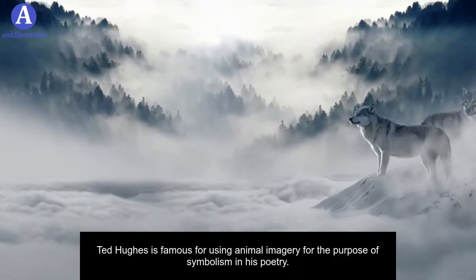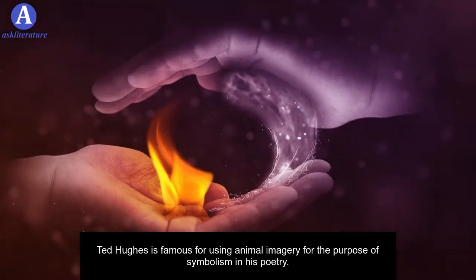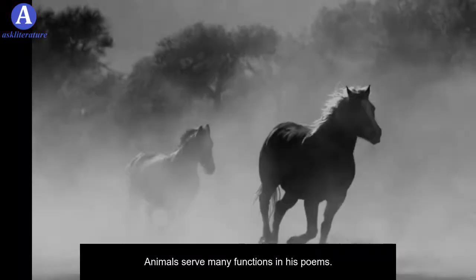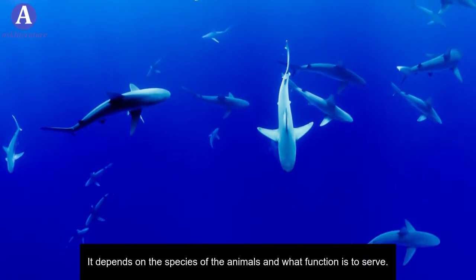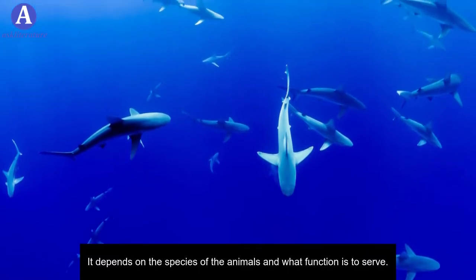Ted Hughes is famous for using animal imagery for the purpose of symbolism in his poetry. Animals serve many functions in his poems. It depends on the species of the animals and what function is to serve.